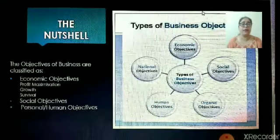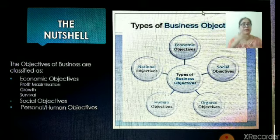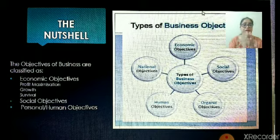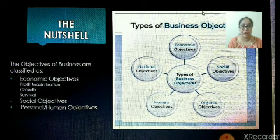In a nutshell, we can say that the business objectives are the objectives which every business wants to achieve. They are classified as economic objectives — further classified into profit maximization, growth, and survival — then the social objectives which every business satisfies by fulfilling its responsibilities towards the society, and the personal objectives which are achieved by giving everything what the persons want from the organization. With this, I finish up with this topic. Thank you and have a nice day.